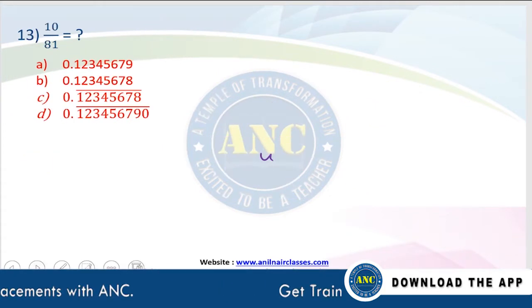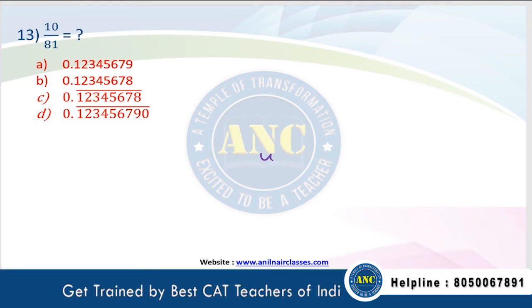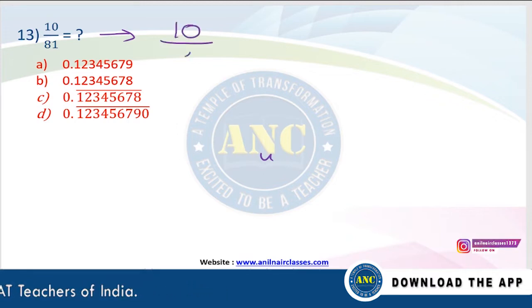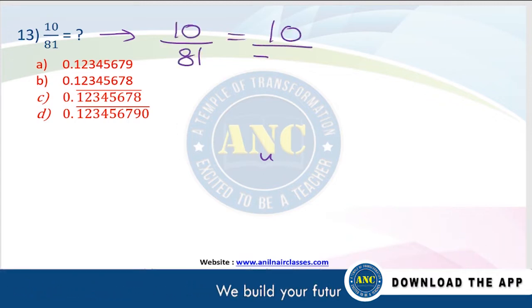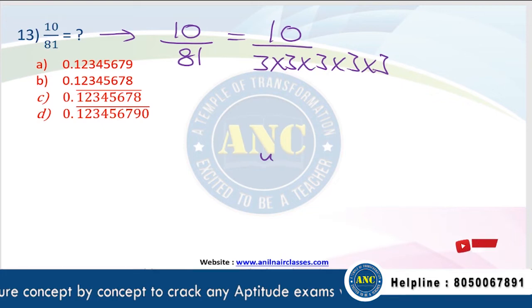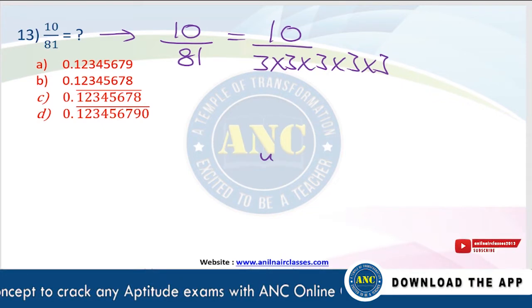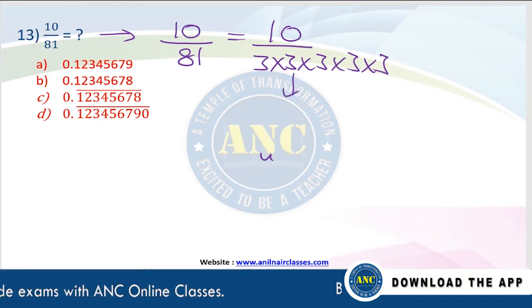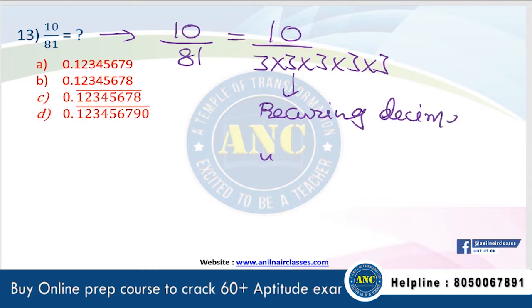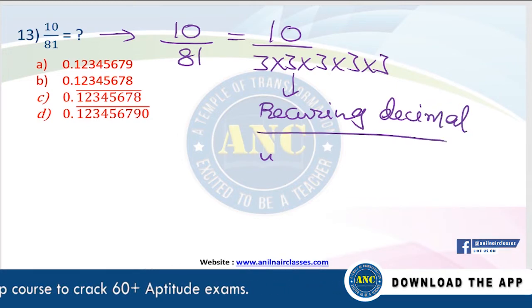Still, we can do like this. Now see here. 10 by 81. 81 is nothing but 3 into 3 into 3 into 3. If the denominator is other than power of 2 and 5, what it will become? It will become a recurring decimal. Answer should be a recurring decimal.